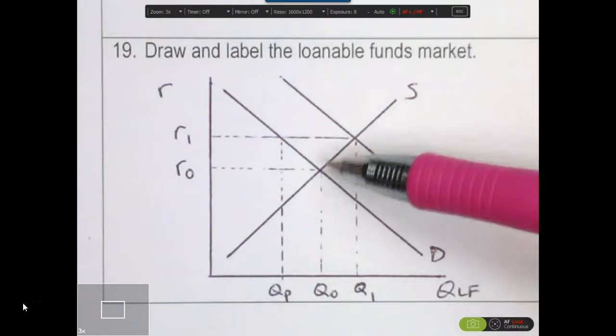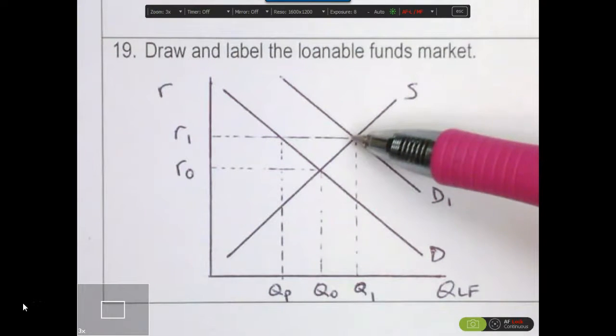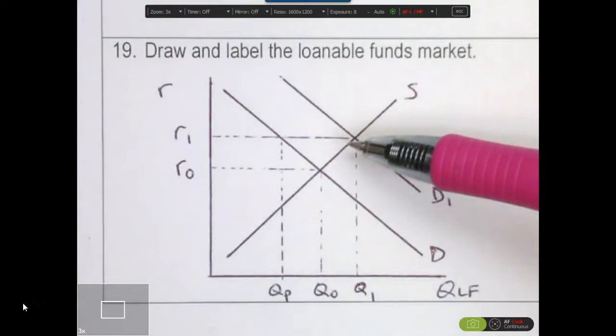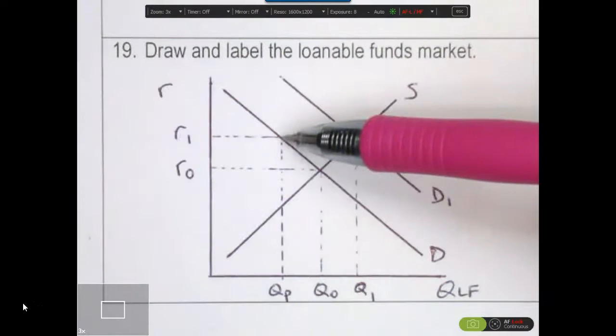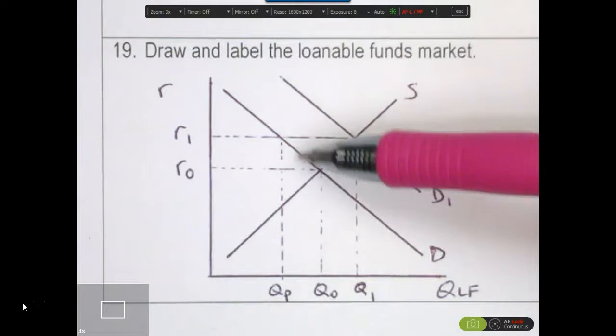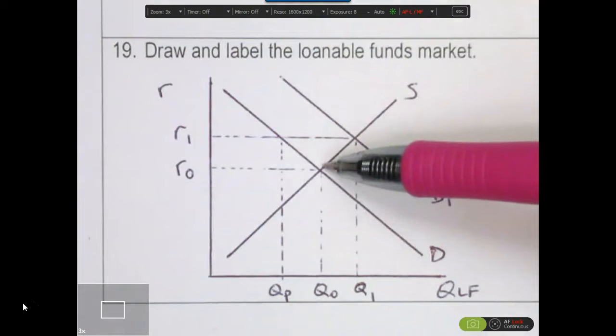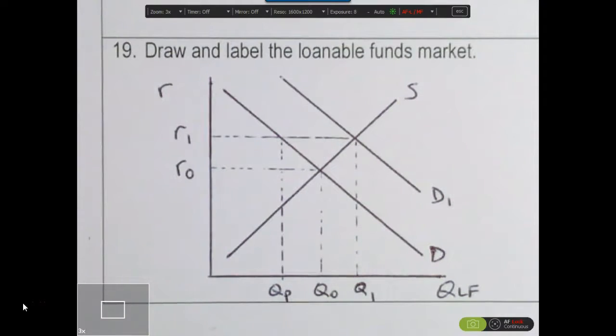Now with government borrowing shifting demand to the right, the interest rate's risen to R1. So any business that had a rate of return that lies between R1 and R0 is now no longer willing to borrow like they were before, because they need to get at least as much in return as they're paying in interest.